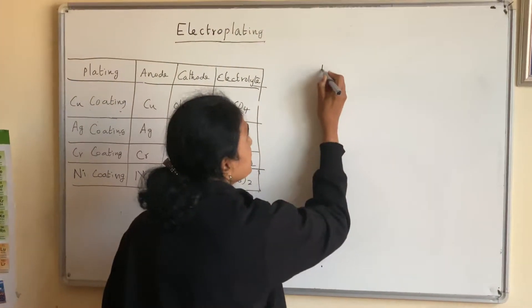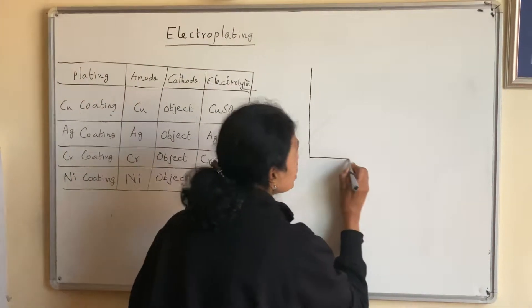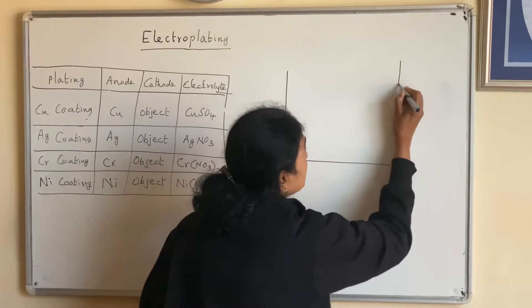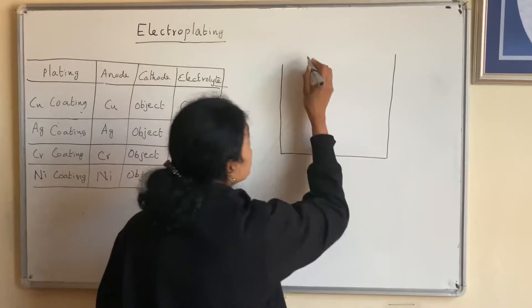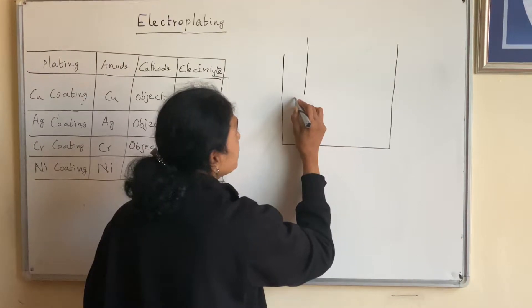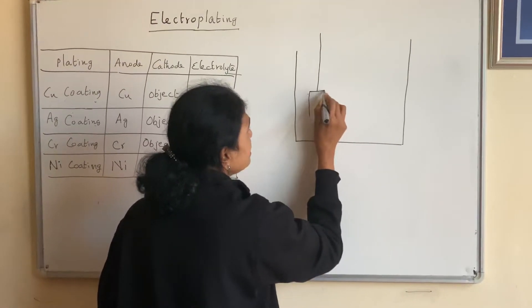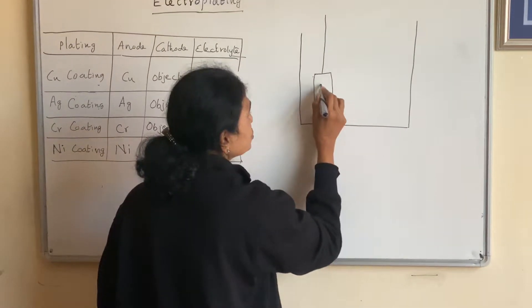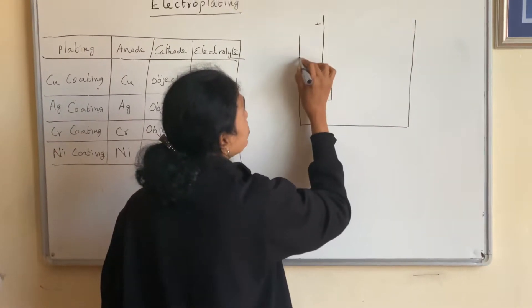Now let us see what happens here in this reaction. You take a beaker. Inside the beaker, you put that coating. Let us say we are going to do silver coating. So I have a silver metal as anode. Silver must be used as anode.